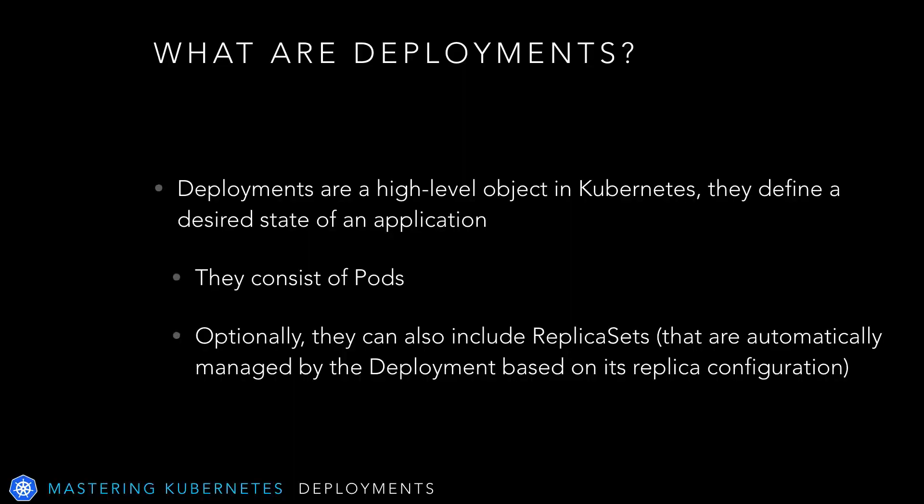Deployments are a way to declare a desired state for your application. Kubernetes uses your deployment, usually defined in a file, to deploy your application according to how you describe it in your deployment configuration. You've already worked with a couple basic deployments to define a Tomcat container and then scale it. Deployments give us the advantage of letting us describe the semantics of our application and its needs in a central area and let Kubernetes handle a fair amount of the details for us.